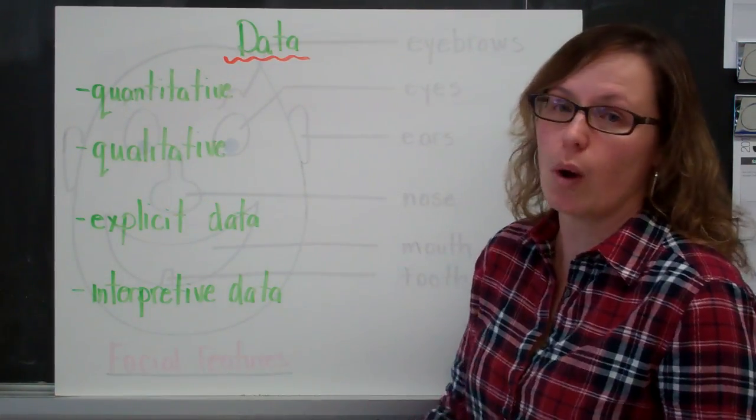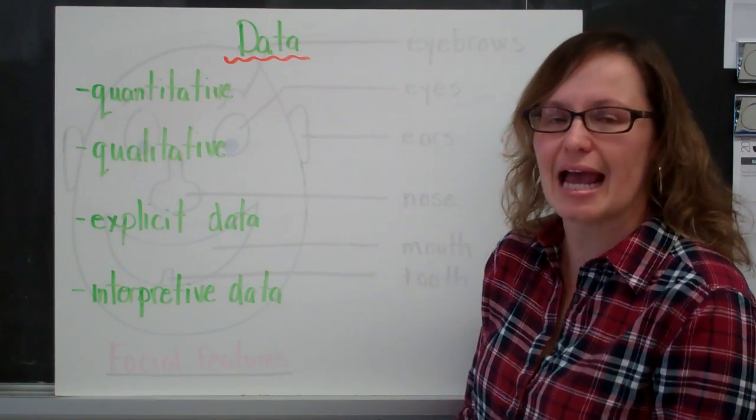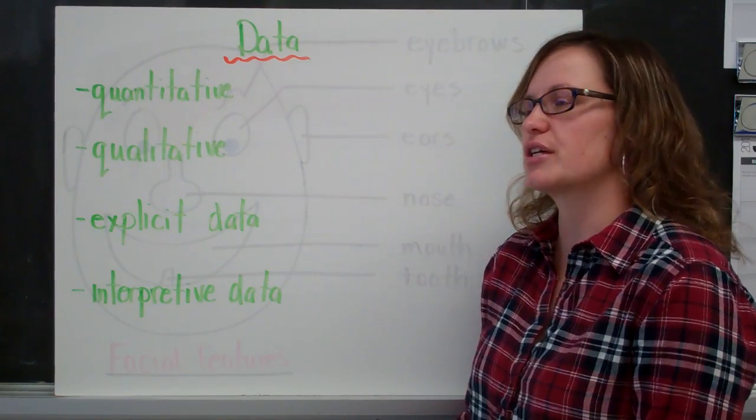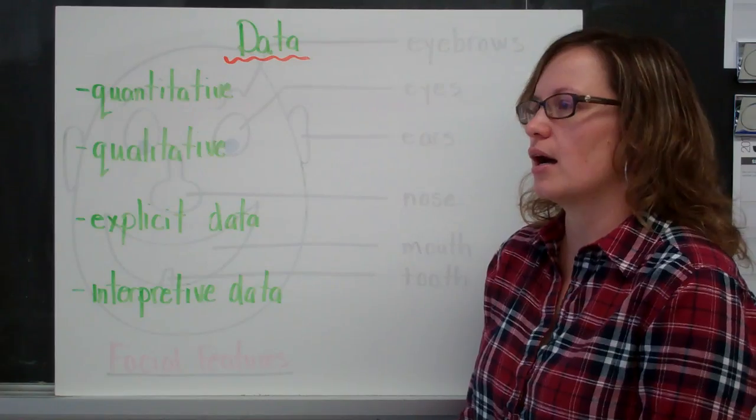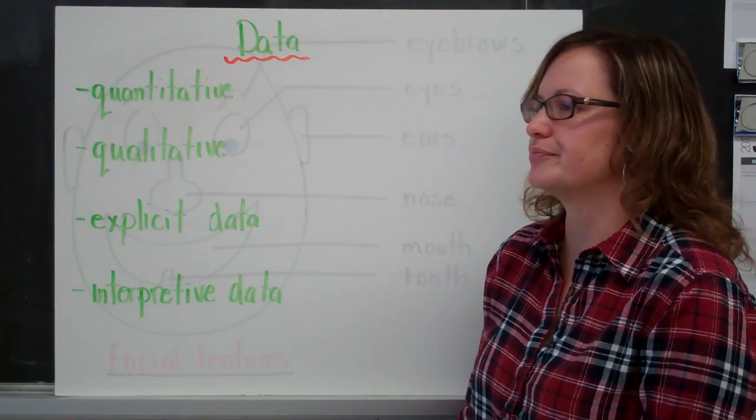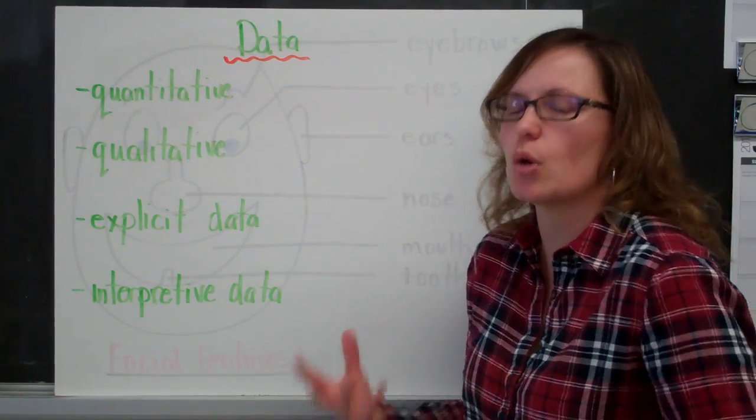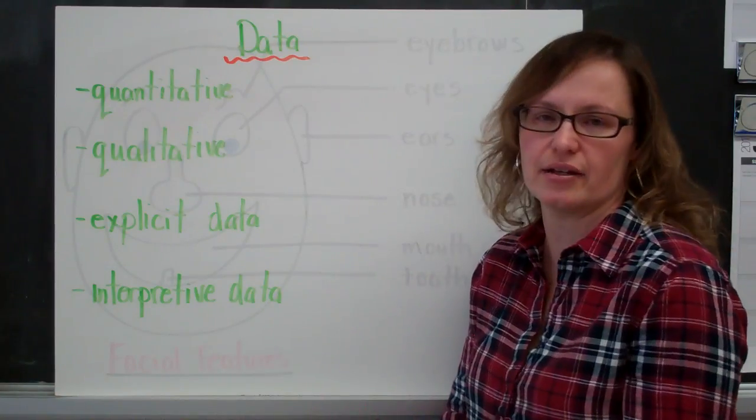Qualitative, if you think of quality, is something that generally can't be measured by a number. So for example, hair color, softness, when you're describing a quality of something, it's qualitative data.